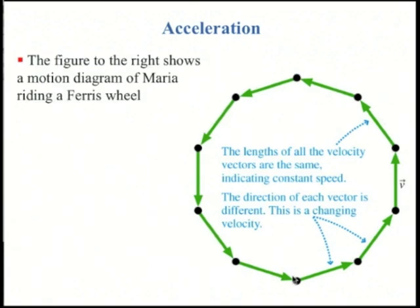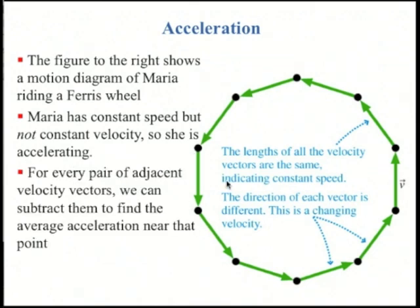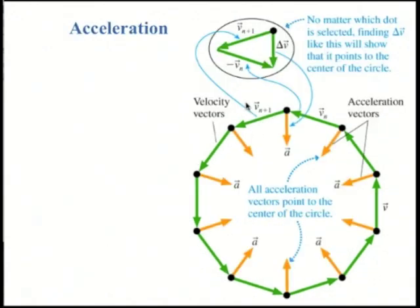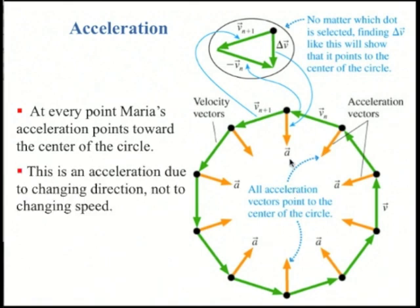Here we show the motion diagram of someone on a ferris wheel, who is going with uniform circular motion. In this case, the object is not speeding up or slowing down. This is a constant speed, but it is accelerating. For every pair of adjacent velocity vectors, we can subtract them to find the average acceleration near that point. So let's take v sub n and v sub n plus 1, the two vectors at the top. If you subtract those vectors, you get a vector which points straight down. Delta v points straight down, so the acceleration points straight down. And if you did that for any other point, you'd get delta v pointing always towards the center of the circle, no matter which dot you choose. So this is an acceleration that's due to change in direction with a constant speed.